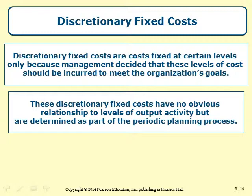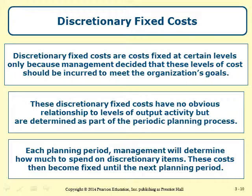Some costs are fixed at certain levels only because management decided to incur these levels to meet the organization's goals. These discretionary fixed costs have no obvious relationships to levels of capacity or output activity, and companies determine them as part of the periodic planning process. Each planning period, management determines how much to spend on discretionary items such as advertising and promotion, public relations, research and development, charitable donations, employee training programs, and management consulting services. These costs then become fixed until the next planning period.